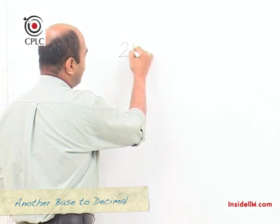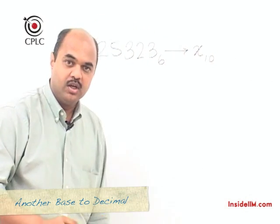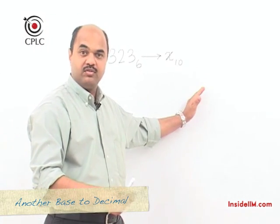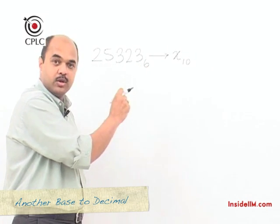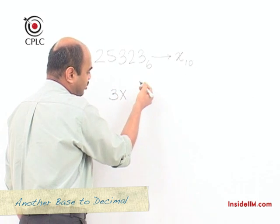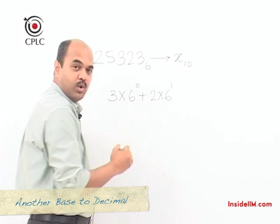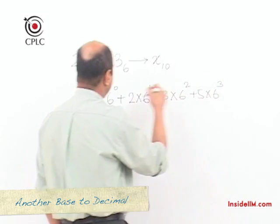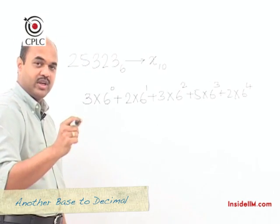For convenience, we will take the same number to check whether we get the original value. Let's look at 25323 in base 6 and convert it back to decimal. When converting from any base to decimal, we use what is called the multiplication method. It makes use of the place value for each digit. So in the number 25323 in base 6, the digit 3 has a place value of 6 raised to 0, digit 2 has a value of 6 raised to 1, digit 3 has a value of 6 raised to 2, digit 5 has a value of 6 raised to 3, and digit 2 has a value of 6 raised to 4.